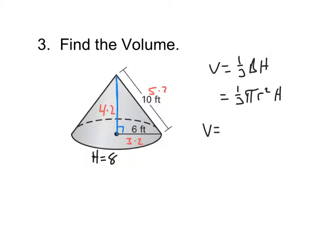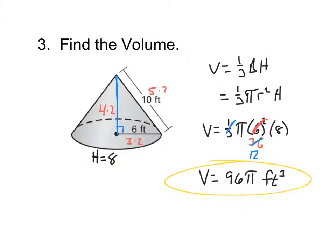Okay, so our volume is one-third pi times 6 squared times 8. And again, you have to square the 6 before you multiply by one-third. And so I get 36 times one-third gives me 12. And so my volume is going to be 8 times 12, which gives me 96 pi cubic feet.